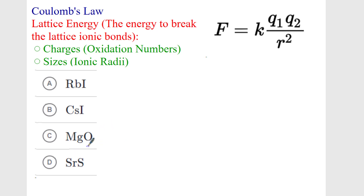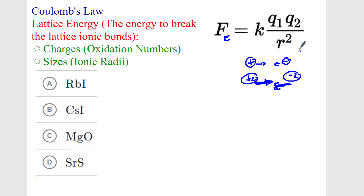Coulomb's Law — the force of electrostatic charges — is KQQ over R squared. The Q's are charges. As charges increase, say positive two and negative two, there is an even greater attraction. The distance is in the denominator, which means the further away the charges are from each other, the less the attraction. So it all comes down to the charges — or oxidation numbers — and the sizes, or the ionic radii. We can use this to predict melting points: which substance has the greatest electrostatic attractions and will take the most lattice energy to break its ionic bonds.